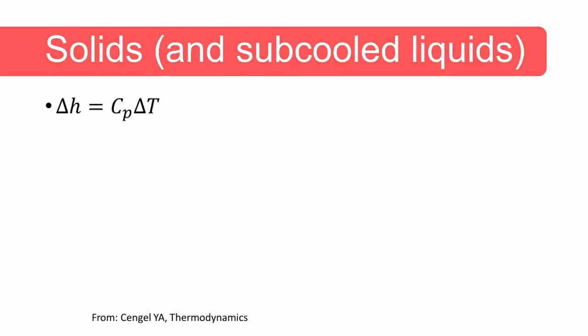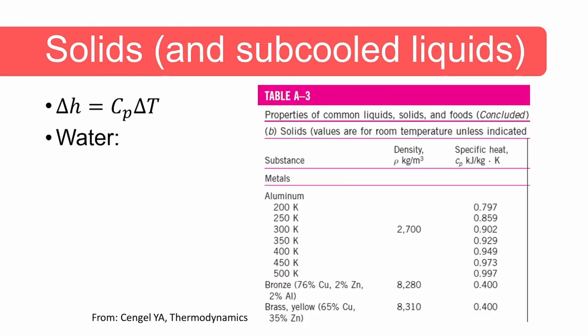When working with subcooled liquids, for instance domestic water and solids, it is often convenient and sufficiently accurate to assume that Δu equals Δh equals cp·ΔT. The values for solids and liquids can be found in tables such as the ones shown here, and for liquid water we use a value of 4.18 for the specific heat.